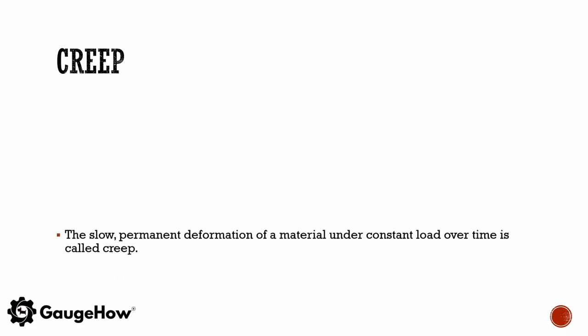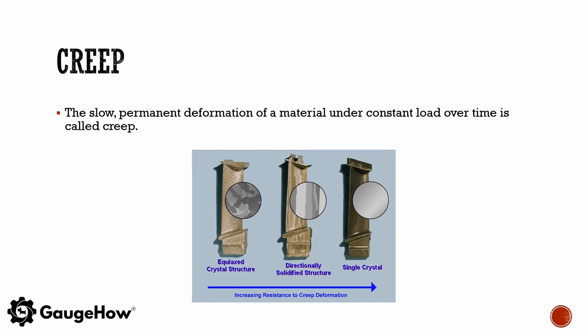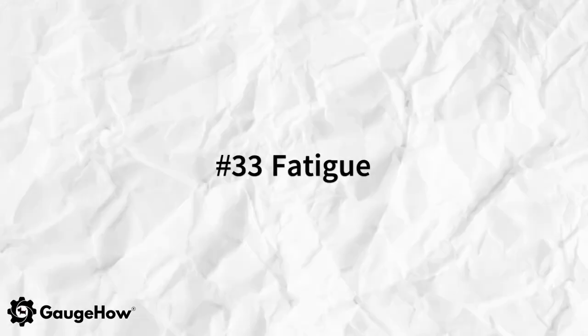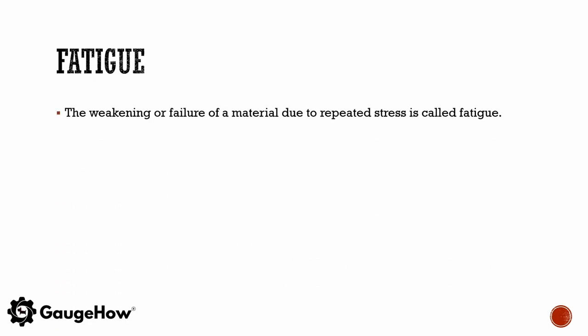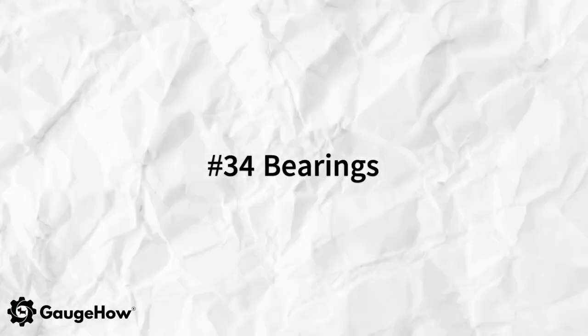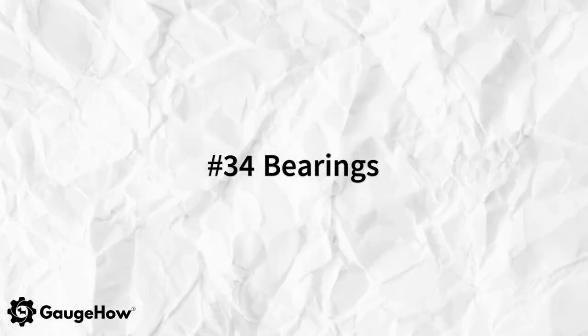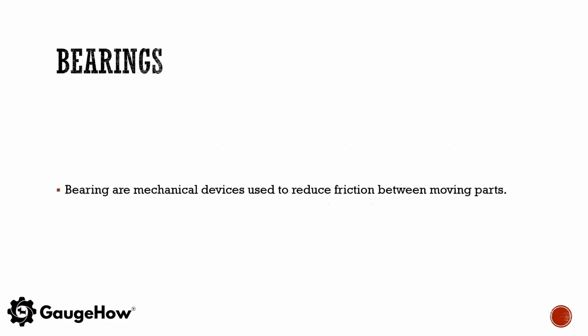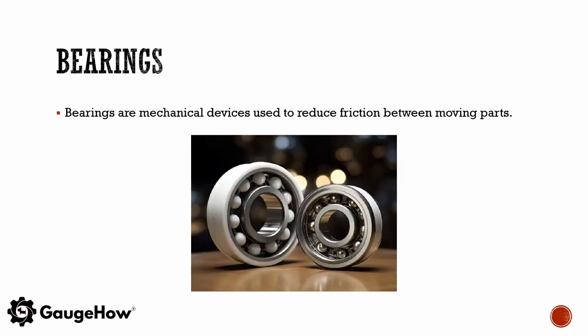The slow permanent deformation of a material under constant load over time is called creep. The weakening or failure of a material due to repeated stress is called fatigue. Bearings are mechanical devices used to reduce friction between moving parts.